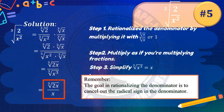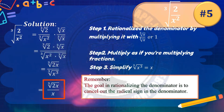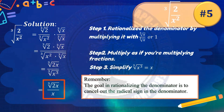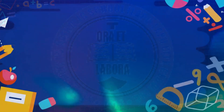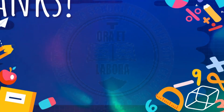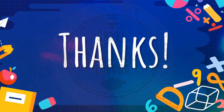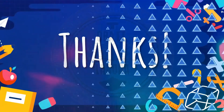Again, the goal in rationalizing the denominator is to cancel out the radical sign in the denominator. If you are looking for the cube root, you need to find the perfect cubes in the denominator. If you are looking for the square root, you need to find the perfect squares in the denominator.